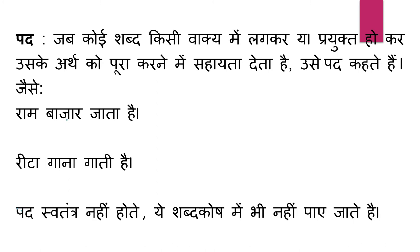When a particular word — like kamal or garam — is used in a particular sentence so that the sentence is complete, it is known as Pad. That is, when a word is independent, just a plain word, it is Shabd. And when the same word is used in a sentence to complete it, it is known as Pad. For example, Ram bazaar jata hai. In this, Ram is a Pad, bazaar is a Pad, jata is a Pad, and hai is a Pad.